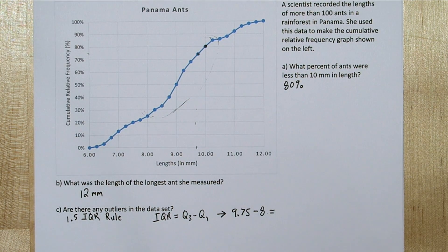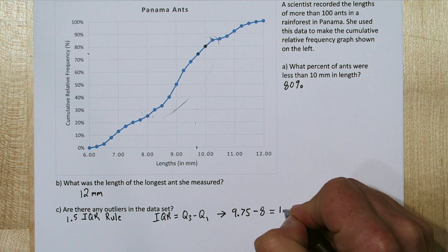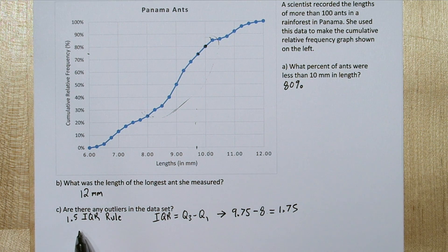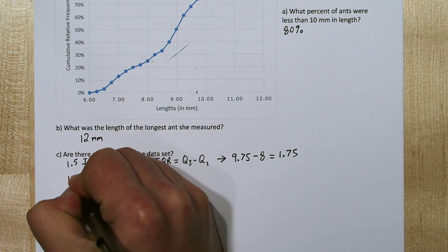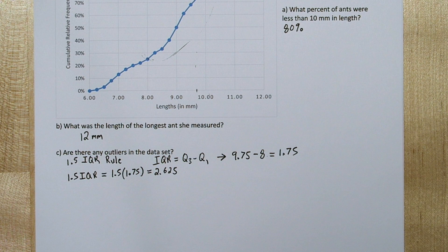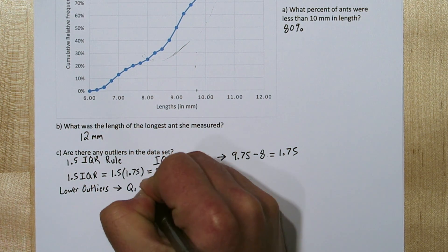So subtracting these two values, we get an interquartile length of 1.75 millimeters. We need to multiply that by 1.5. So 1.5 IQRs is 2.625 millimeters. Now let's check for lower outliers.